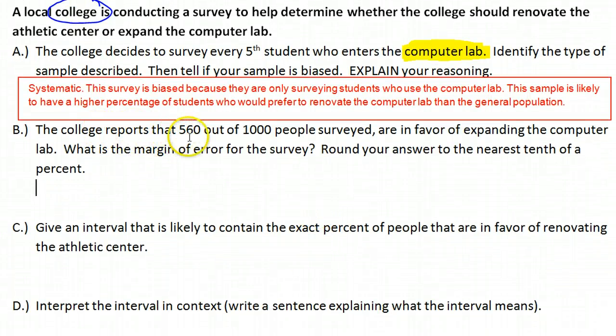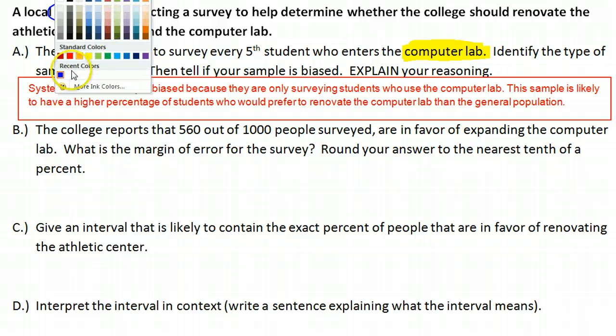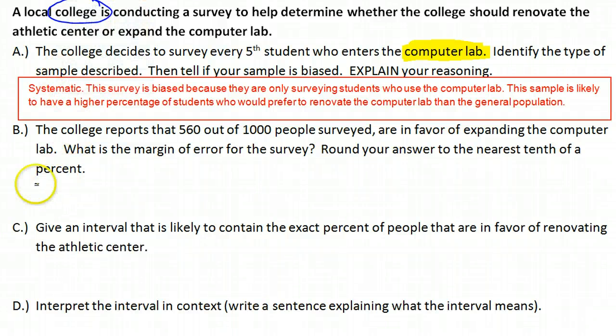The college reports that 560 out of 1,000 people surveyed are in favor of expanding the computer lab. What is the margin of error for the survey? For margin of error, we know that margin of error is 1 over the square root of the sample size.